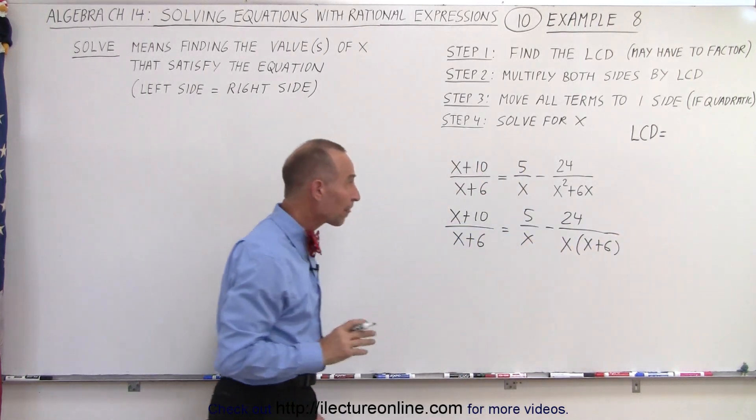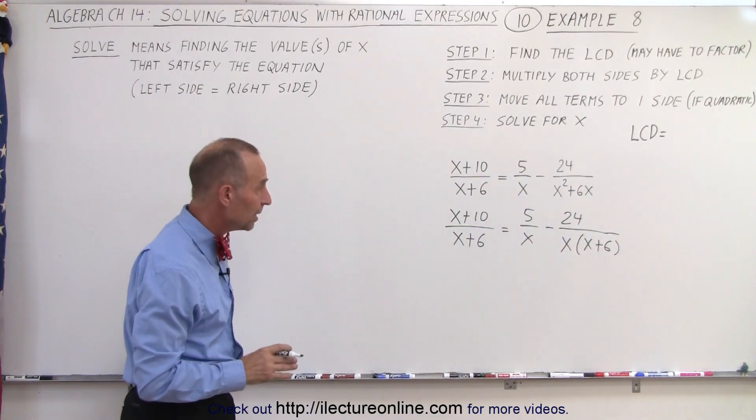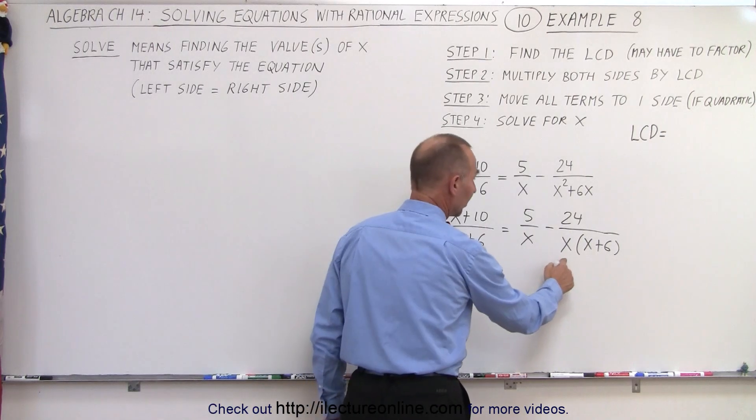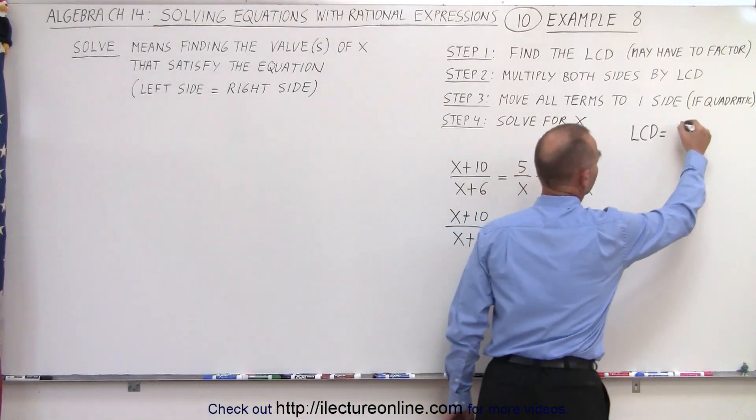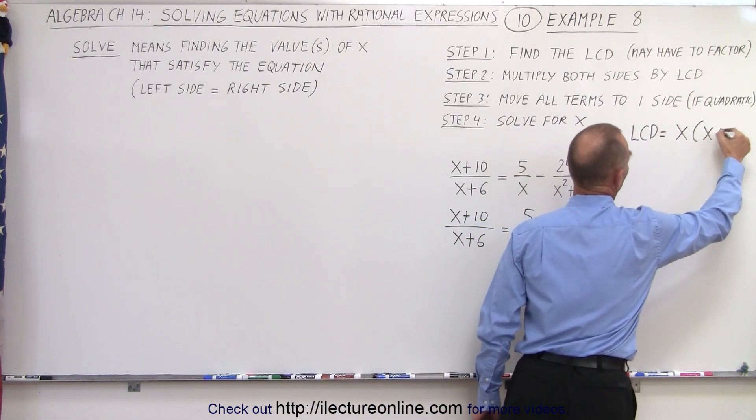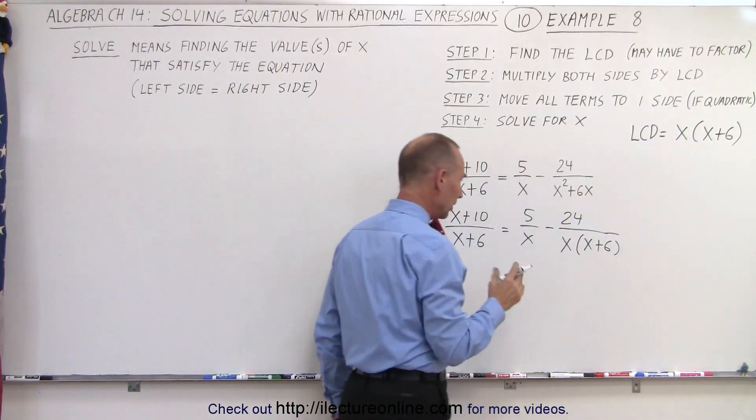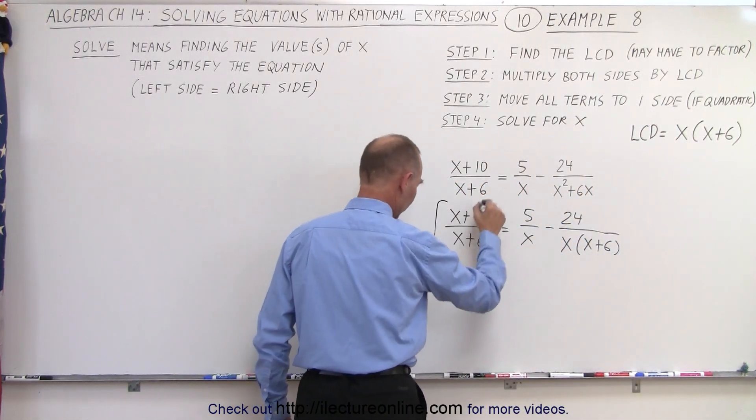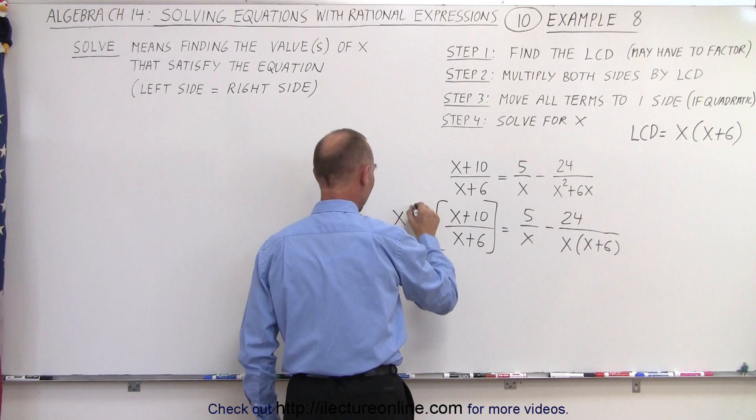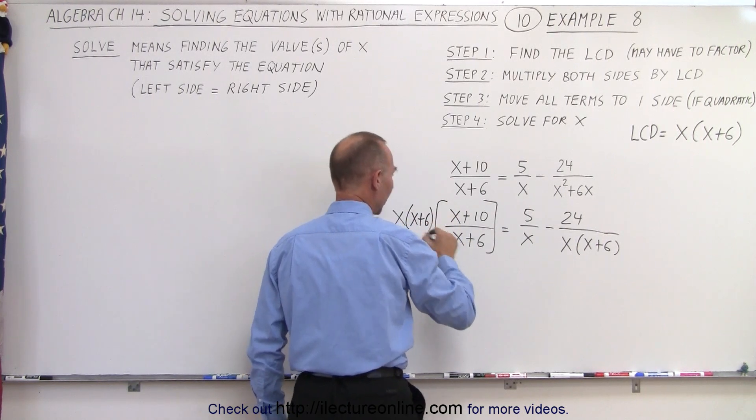And then it becomes quite obvious what our lowest common denominator should be. It should be the product of x and (x+6). So now we need to multiply both sides of the equation by x(x+6).